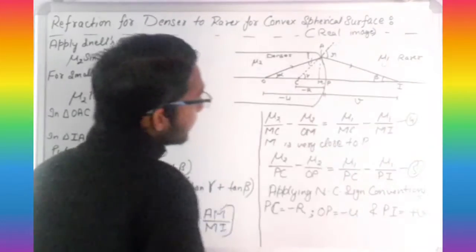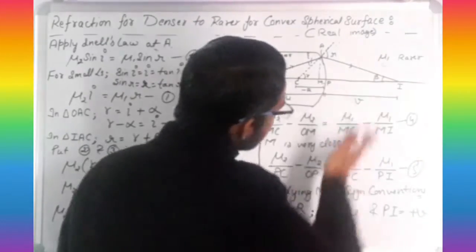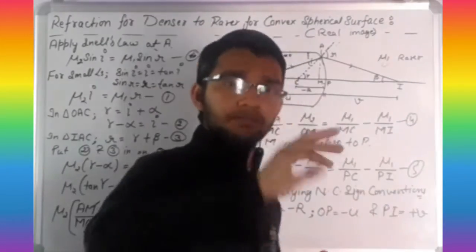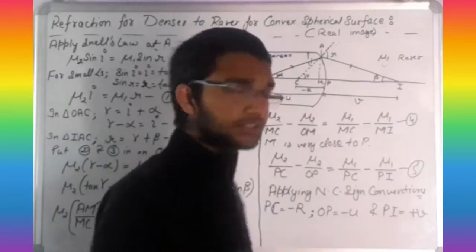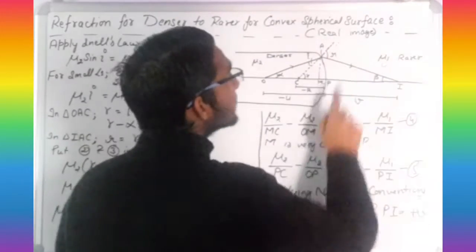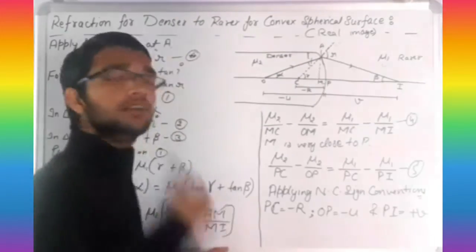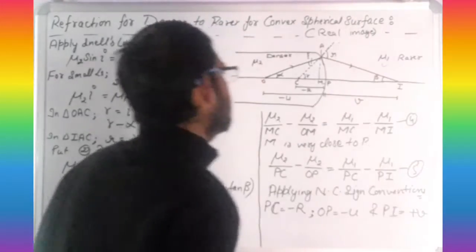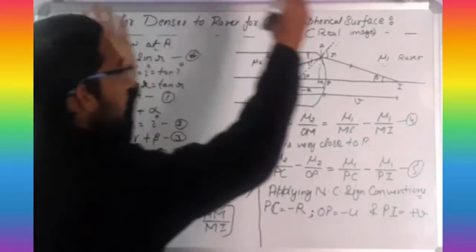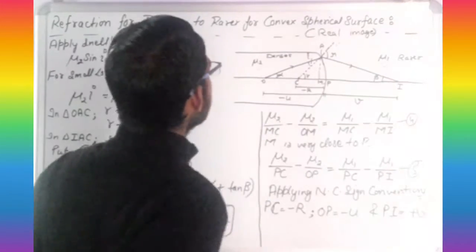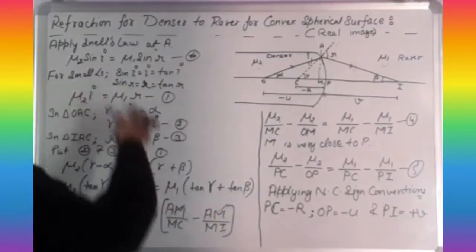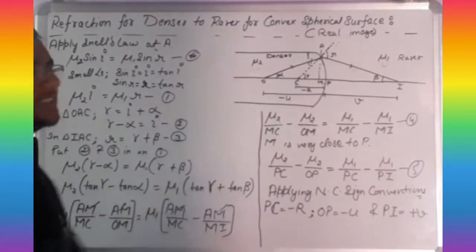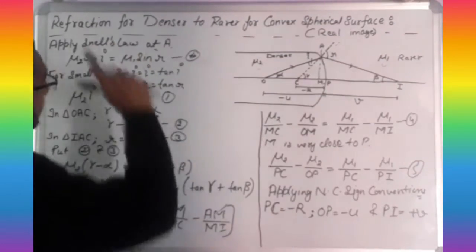P to I is the image distance, that is V, and it is taken as positive because it is measured along the direction of traveling of the ray of light. Now we have to understand the diagram and the derivation. Basically, the first step is to apply the small angle approximation.